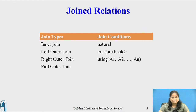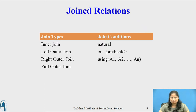As we know, there are the following join types and join conditions as shown in the table. These three join conditions — natural, on, and using — are used with all join types: inner join, left outer join, right outer join, and full outer join.